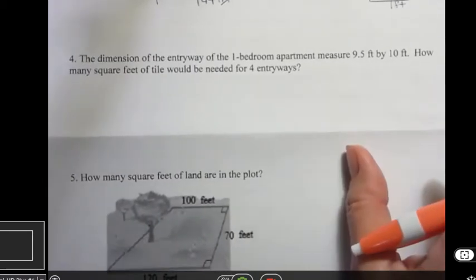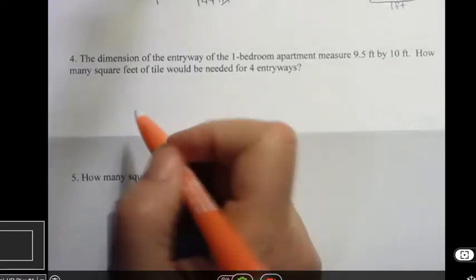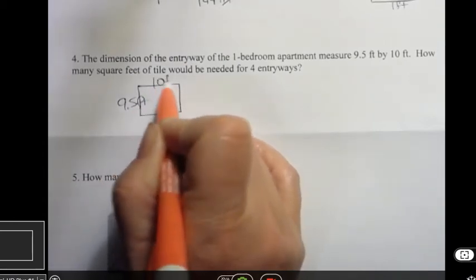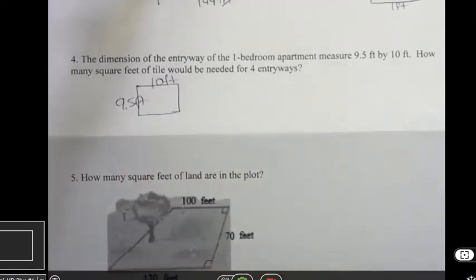Okay, number four. The dimensions of an entryway of a one-bedroom apartment measure 9.5 by 10 feet. So pretty close to a square there. We'll say this is 9.5 feet and this is 10 feet. How many square feet of tile would be needed for four such entryways?